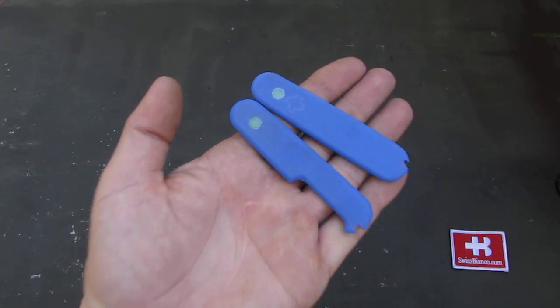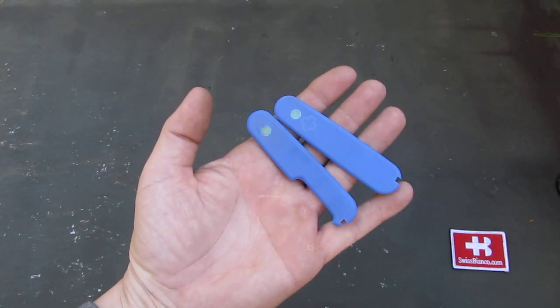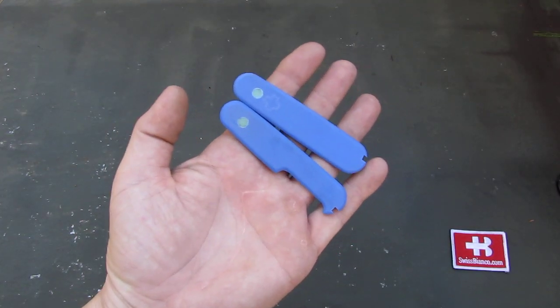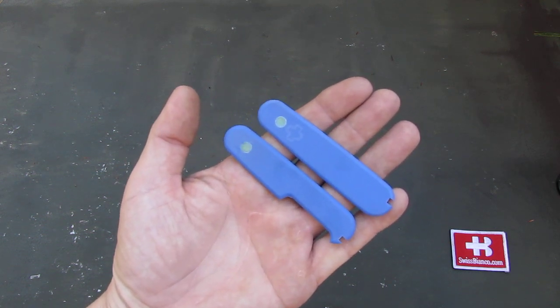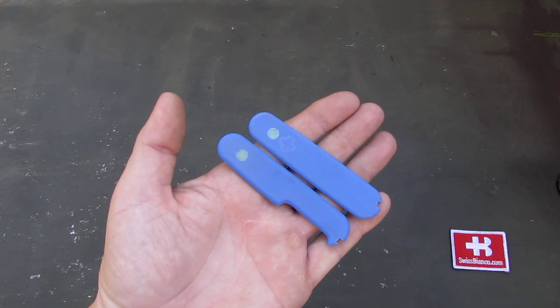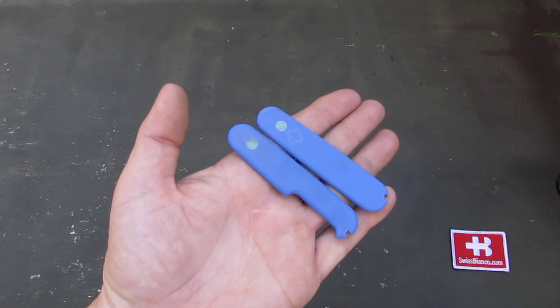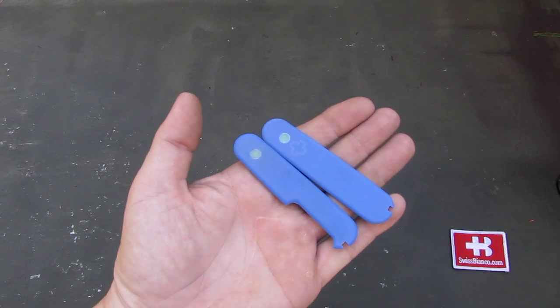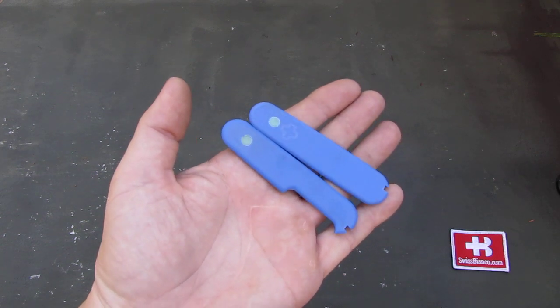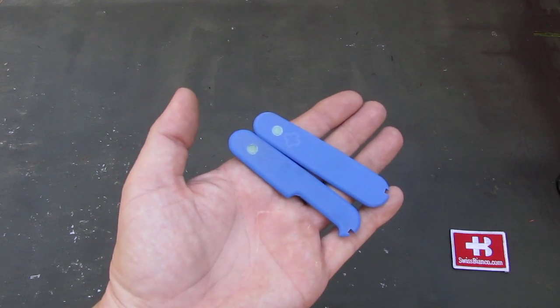And hopefully the camera is going to pick that up. They glow quite a bit and that way you don't lose the knife that easily. That much about the brand new glow dot blue G10 scales.